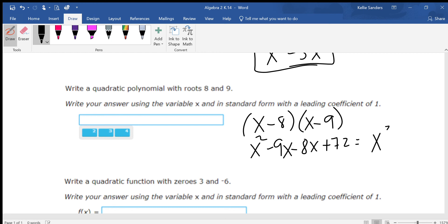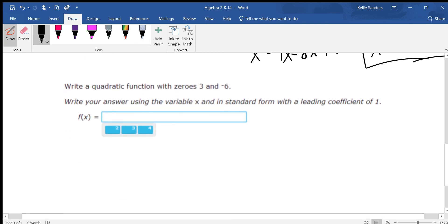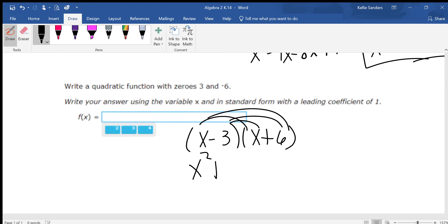x minus three x plus six: x squared plus six x minus three x minus eighteen, which is x squared plus three x minus eighteen.